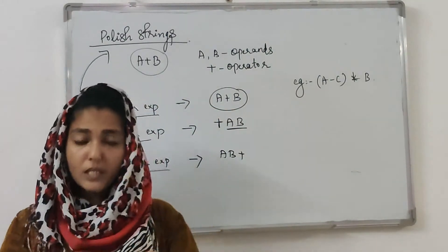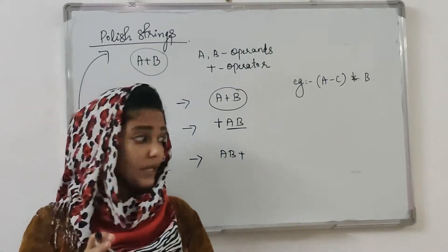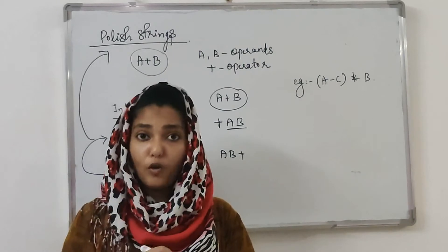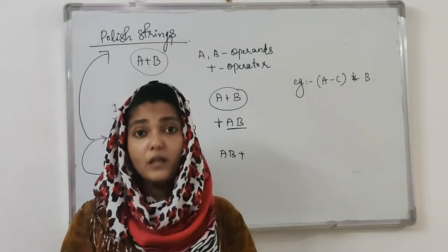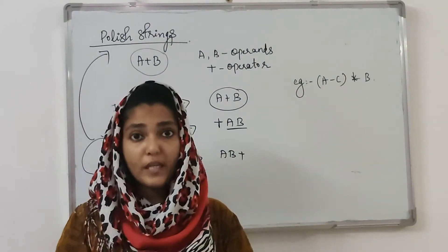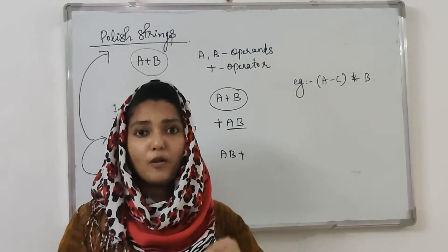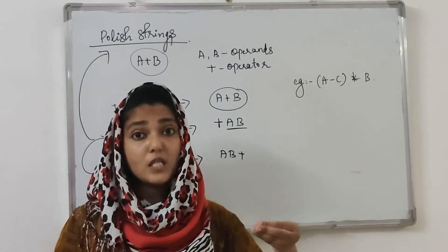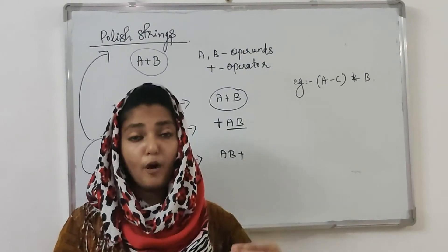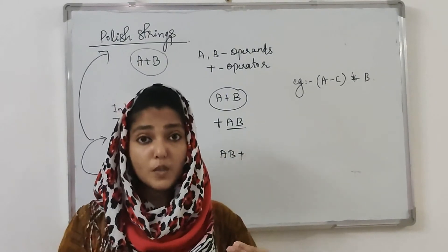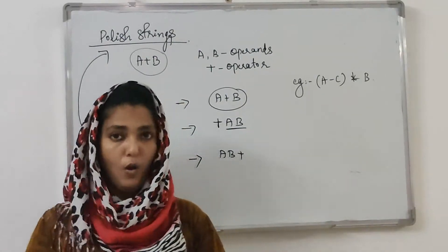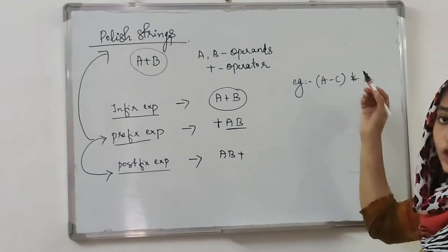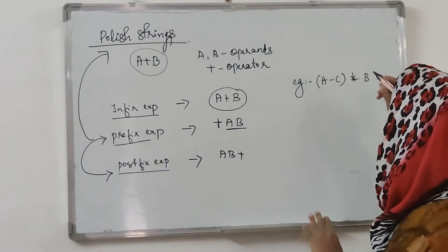Expressions can be written in three ways: infix, prefix, and postfix. Infix is the normal form where the operator is placed between the operands. Prefix and postfix are called Polish strings. Prefix means the operator is placed before the operands; postfix means the operator is placed after the operands.